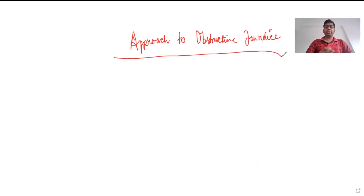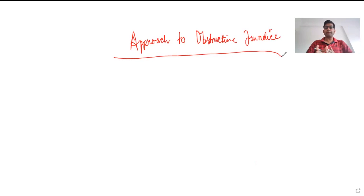Hello friends. In this video we continue with the lecture on the approach to obstructive jaundice. In the previous lecture we have already discussed the histories to be taken, the differential diagnosis, and how to arrive at a provisional diagnosis based on history and examination. Now we will look into the investigations and the treatment algorithms for a patient with obstructive jaundice.